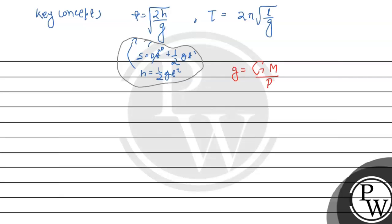On the other planet, g' equals GM divided by R squared. The mass of the other planet is M divided by 2, and the radius R is the same. So g' equals one-half times g, which means g' equals g by 2.